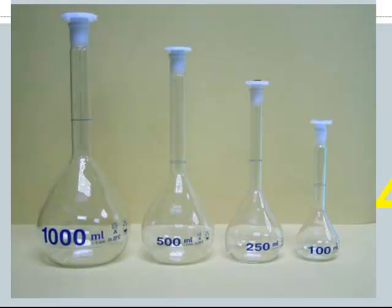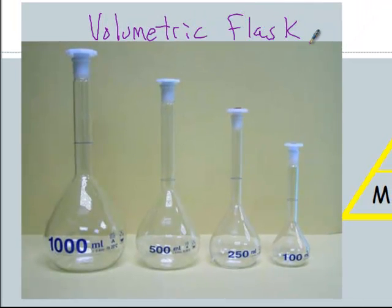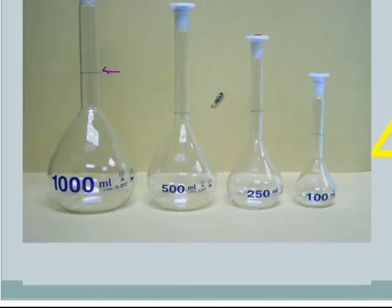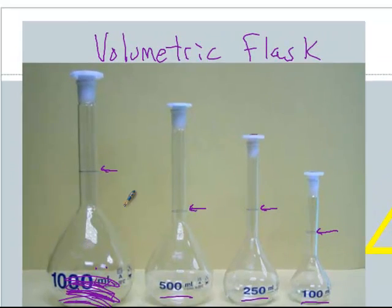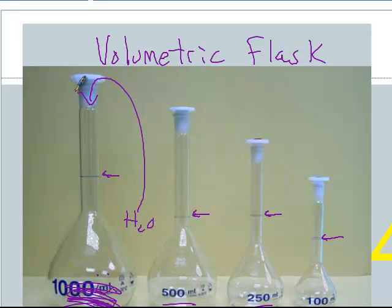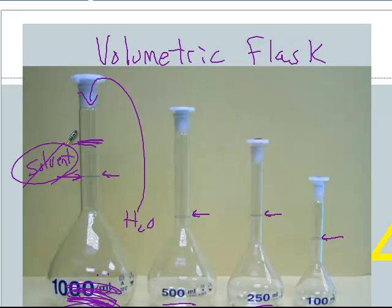These are called volumetric flasks, and this is how chemists make a solution — how we're going to make a solution in lab. There's only one graduation on these flasks, and that one graduation is equal to the volume of the flask. You know how many grams you have, so you know how many moles. You add those grams to the flask, start adding distilled water and mix it around before you add water up to the line. You don't add 1,000 milliliters first and then add the solid, because the solid would push the volume greater than 1,000 milliliters since it takes up space.